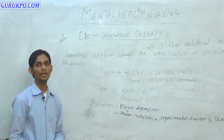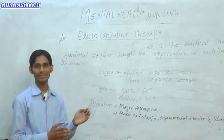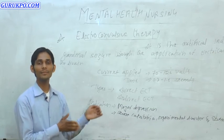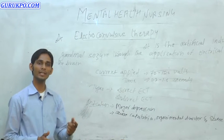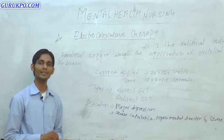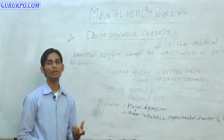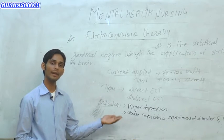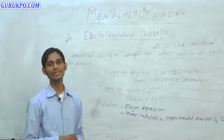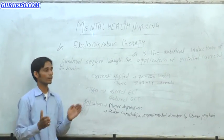Now we will look at the nurse's responsibilities during ECT, classified into three phases. The first is pre-treatment evaluation. The nurse is responsible for collecting the history from the client, obtaining written consent for the procedure, withholding night doses such as diazepam, and also withholding morning doses. The client should have an empty bowel before ECT, and the procedure should be explained to win the confidence of the client.